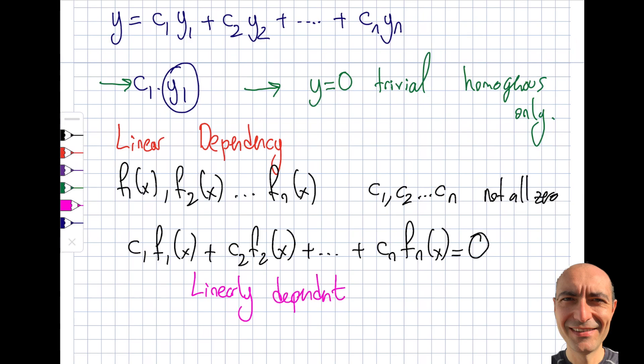Going back to existence and uniqueness — from your other courses, we are interested in independent solutions. We don't want solutions that are dependent on each other. So this is important: if these are linearly dependent, then I may not have solved the whole question properly. This is a fundamental topic.